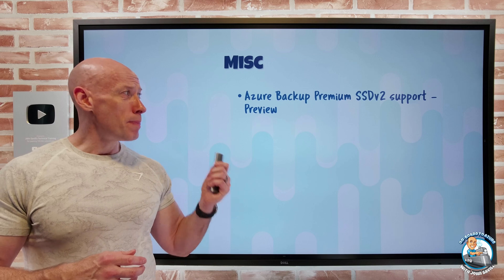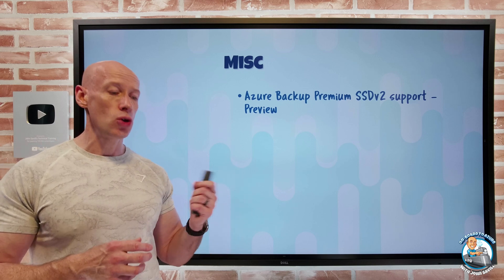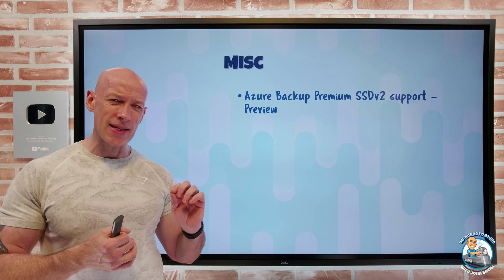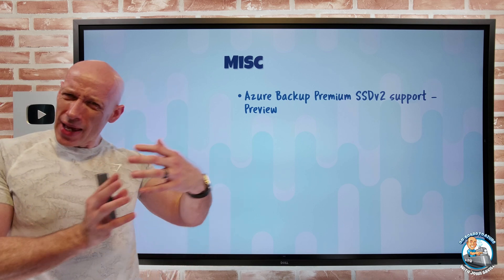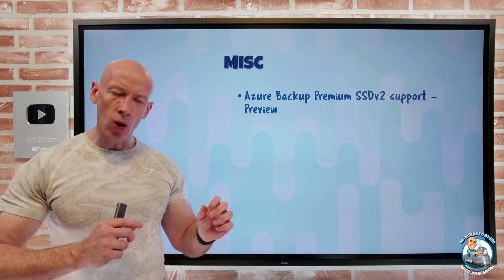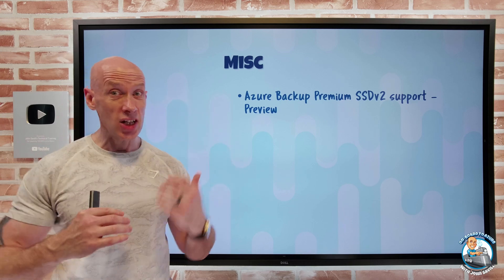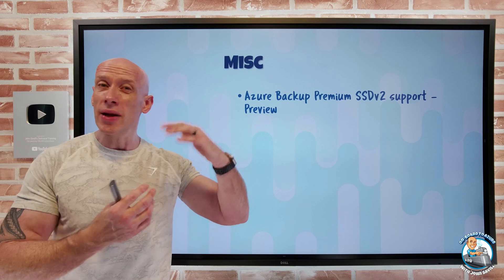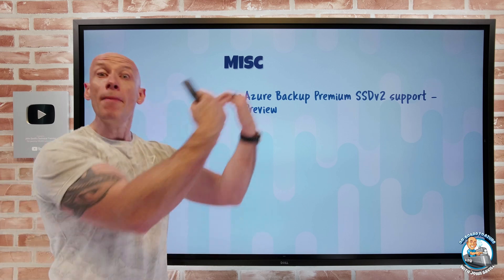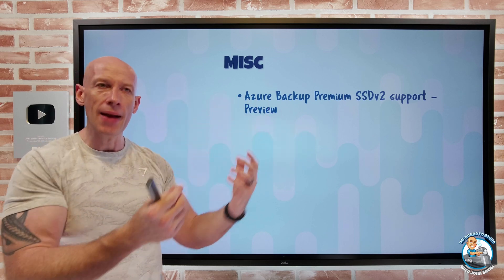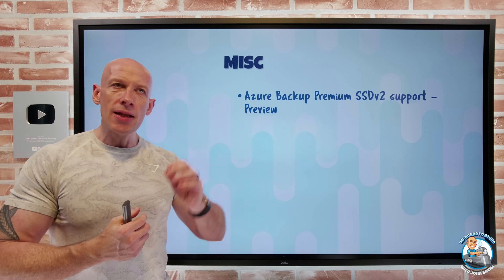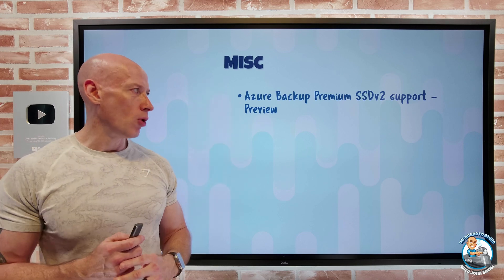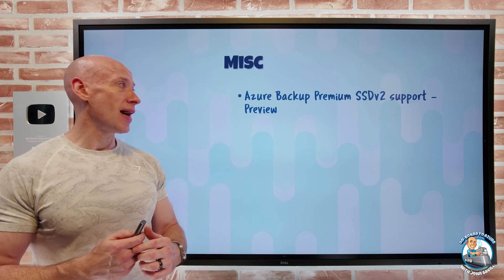Miscellaneous: Azure Backup now has premium SSD v2 support in more regions — I think it's East US and West Europe. Premium SSD v2 is a bit more like Ultra Disk — the IOPS and throughput are separate dials I can change dynamically without shutting down the VM connected to the disk. I can ramp up IOPS and throughput for a big batch workload, then ramp back down, paying based on capacity, IOPS, and throughput separately. Now I can protect that with Azure Backup.